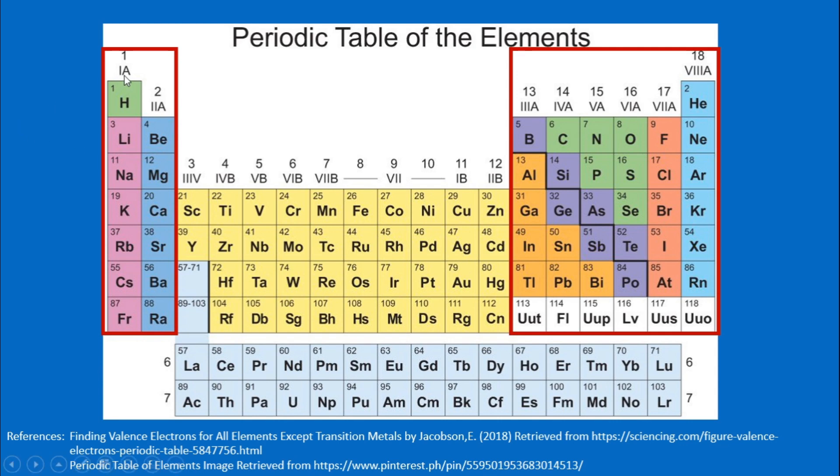By just looking at the group name or the column name, we will be able to tell how many valence electrons an element has. If it is in group 1A, it has 1 valence electron. If it is in group 2A, 2 valence electrons. So on and so forth. Notice that carbon, silicon, and germanium belong to group 4A. As such, we can tell that it has 4 valence electrons. Nitrogen has 5 valence electrons. Neon has 8 valence electrons. And sulfur has 6 valence electrons.